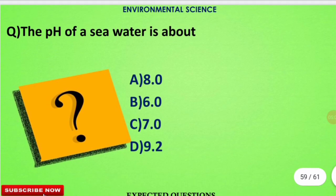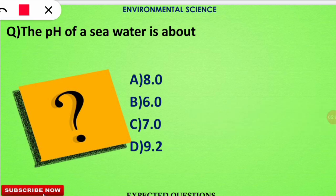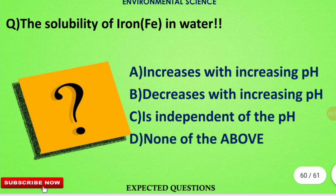The next question is: the pH of seawater is about how much? The correct option is option A — the pH of seawater is slightly alkaline in nature.